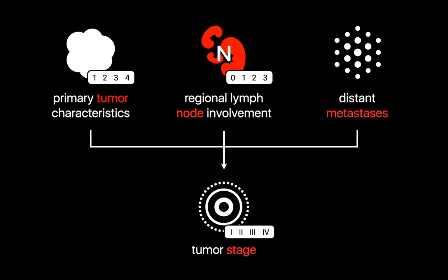The regional lymph node, or N category, is scored on a scale of 0 to 3, based on the anatomical extent of lymph node spread. The distant metastasis, or M category, is scored on a scale of 0 to 1, based on the presence of distant metastasis, including malignant pleural or pericardial effusions.